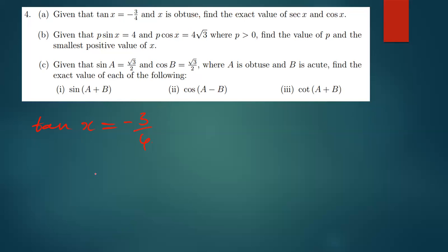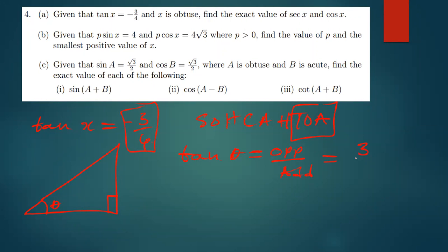The first thing to do is draw a right-angle triangle. Placing our theta there, using SOHCAHTOA, we know that tan theta equals the opposite divided by the adjacent. Comparing with the given value, we ignore the negative sign for now and use 3 over 4, so the opposite is 3 and the adjacent is 4.